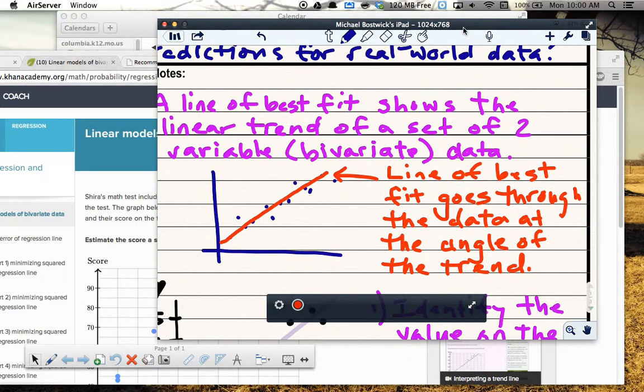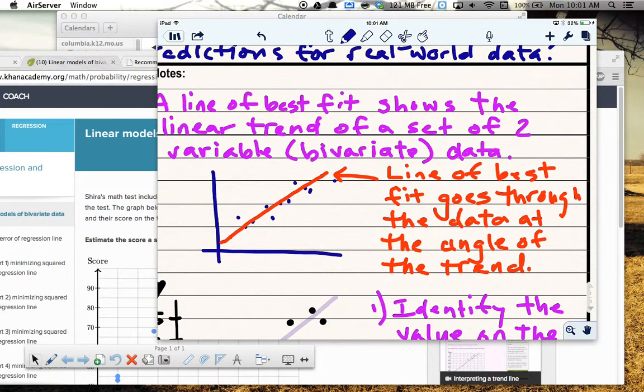And so I've got an example here drawn for you. If I have this set of data and I'm looking at that and I draw this red trend line in, that line of best fit goes through the data at the angle of the trend. And so you can see it's kind of in the data, so it's in the right position, but it also follows what we would say the trend of the data is, which is to say that it moves up and to the right at a particular angle, which you guys might remember as slope.